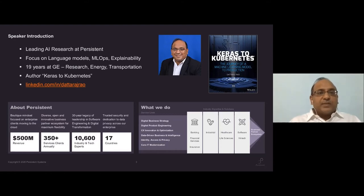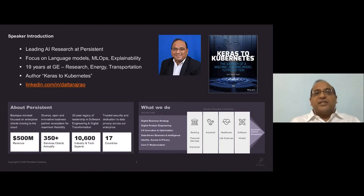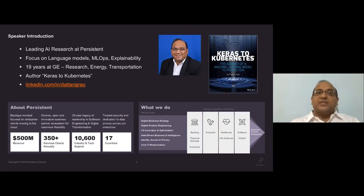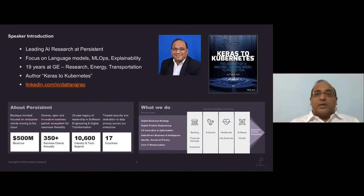A little bit about me: I lead the AI research team at Persistent. I've been with Persistent for a little over a year. Before that I worked for General Electric GE — at GE Research Energy and Transportation. I'm also the author of the book 'Keras to Kubernetes: The Journey of a Machine Learning Model to Production,' which covers taking a model developed in Keras and deploying it to a Kubernetes cluster. I'm active on LinkedIn, so feel free to connect.